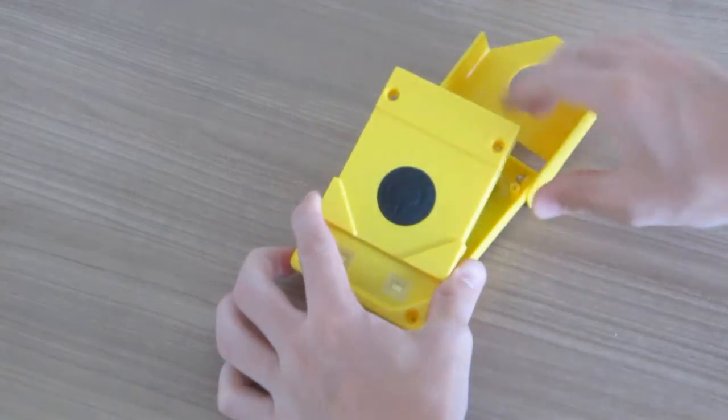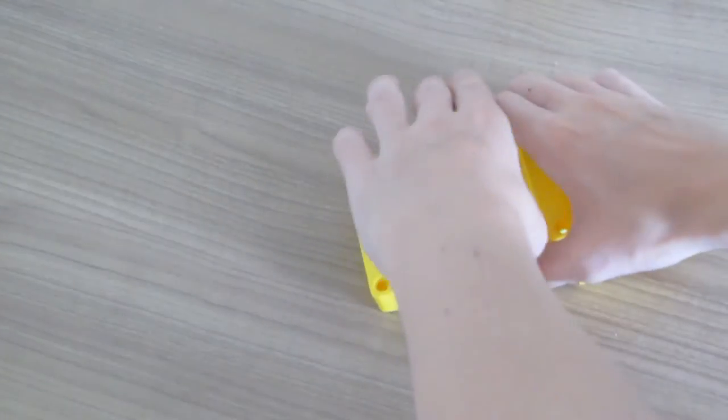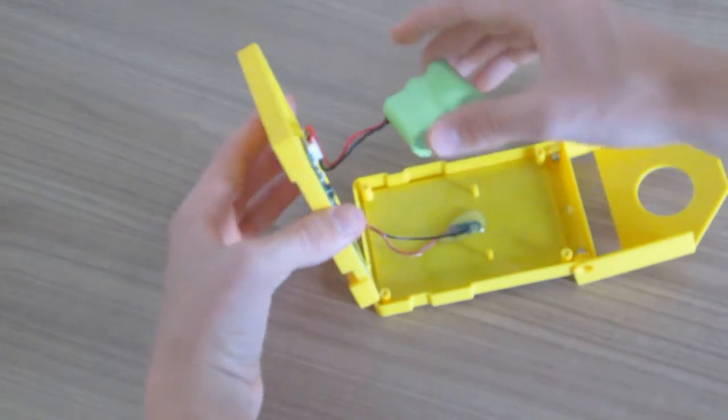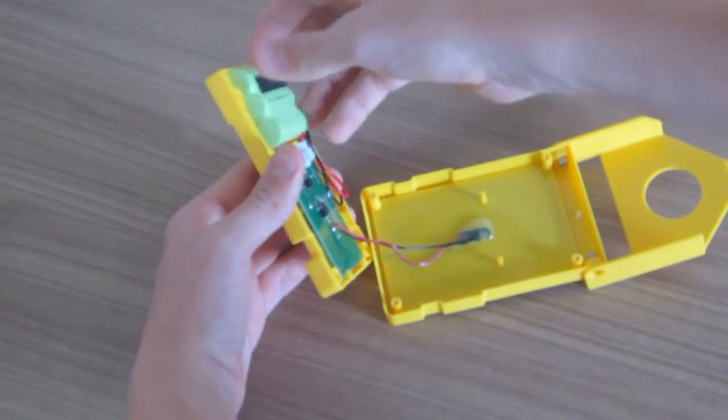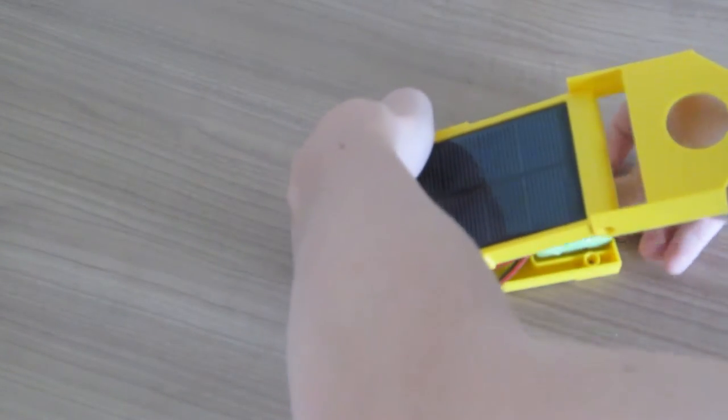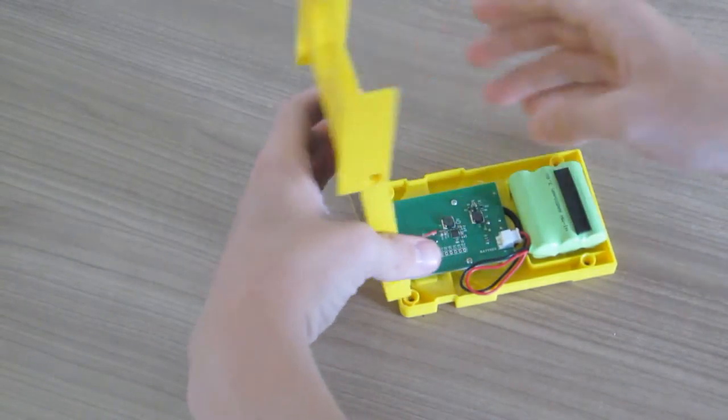So here I opened Waka Waka Lite and as you see here there are 3 AA batteries which provide the light for 80 hours, 16 hours, or 8 hours depending on the setting.